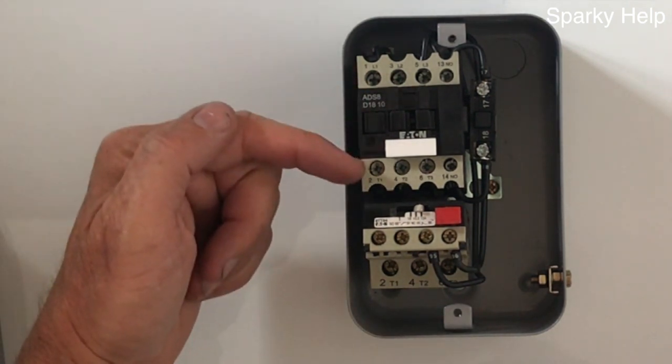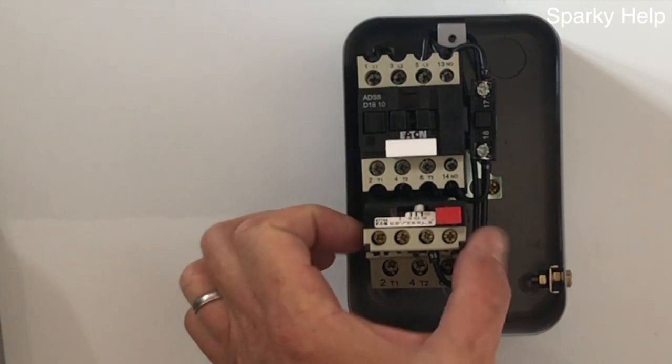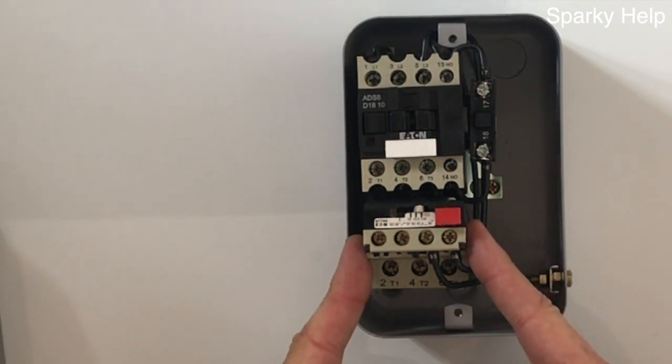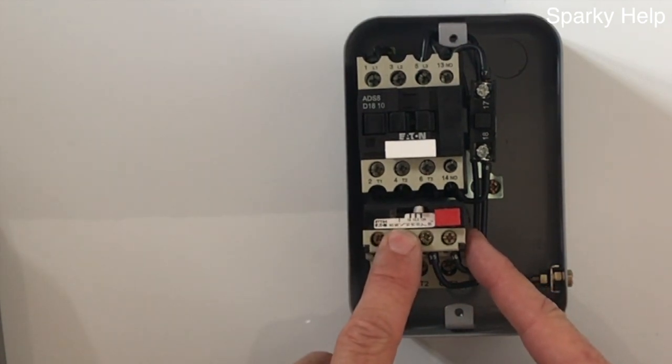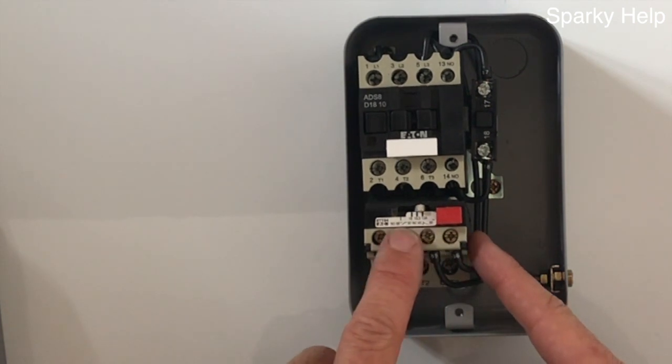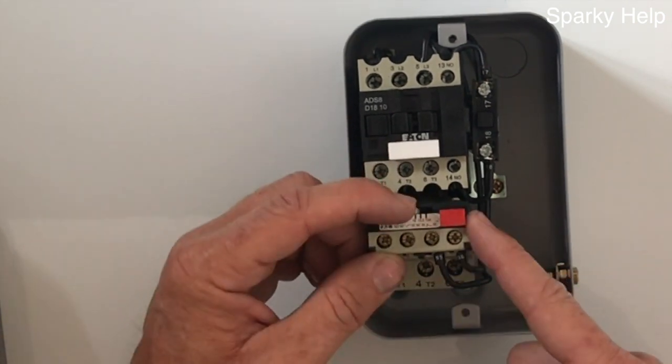What we've got inside is a contactor and the overload. You would have to buy the overload separately for whatever motor you've got. On this particular one it is 13 to 18 amps as an adjustable.